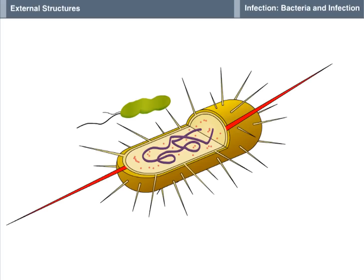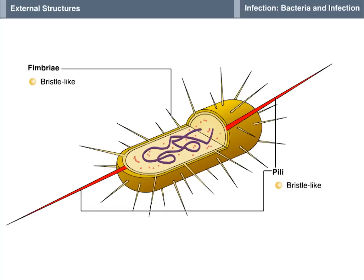The cell walls of some bacteria have hair-like appendages called fimbriae and pili. These appendages are shorter and thinner than flagella, less whip-like and more like bristles, and function in cellular attachment rather than cell movement.